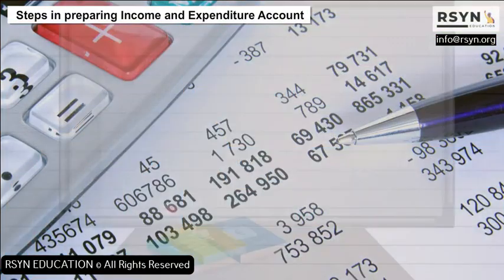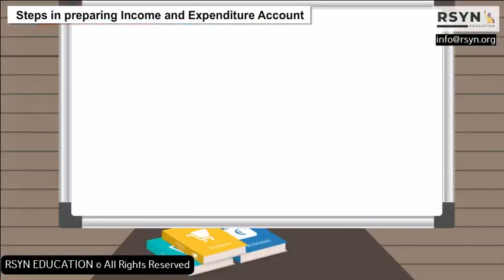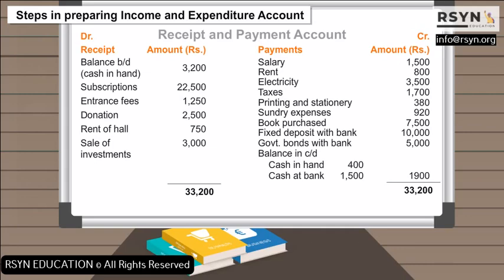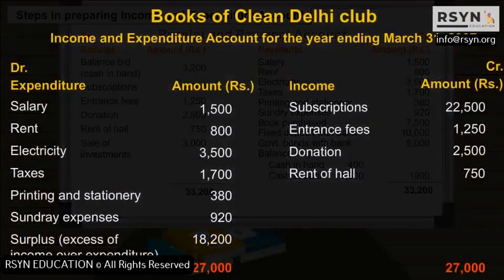Example: From the receipt and payment account given below, prepare the income and expenditure account of Clean Delhi Club for the year ended March 31st, 2007.